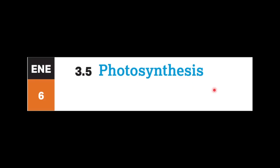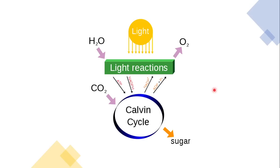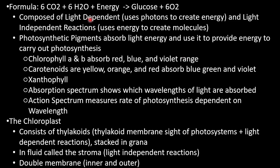Photosynthesis: water and carbon dioxide come in, oxygen and sugar come out. There are light reactions and light-independent reactions, also known as the Calvin cycle. The light reactions produce NADPH and ATP for use. The Calvin cycle uses ATP — via hydrolysis converting to ADP and phosphate — and takes the electron from NADPH, turning it into NADP+.